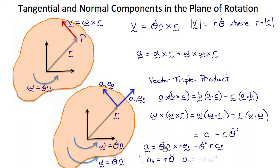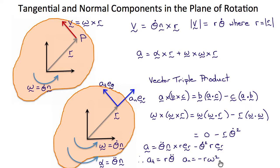So r θ double dot is the tangential component of the acceleration, and the normal component a_n is minus r θ-dot squared, which is minus r ω squared. So the tangential component of the acceleration is r times the magnitude of the angular acceleration, and the normal component is minus r times the square of the angular velocity magnitude.